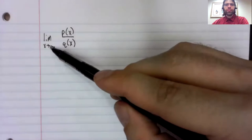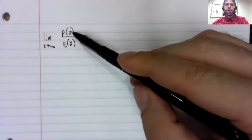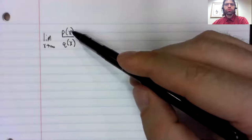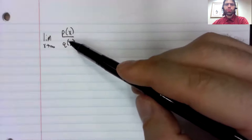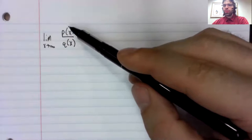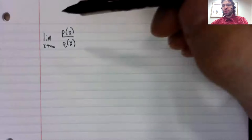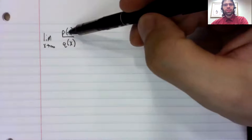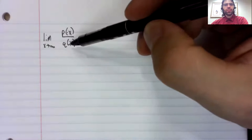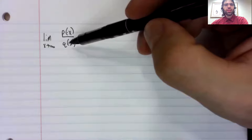As x goes to infinity, any polynomial goes to either infinity or negative infinity. So individually, this limit doesn't exist, and this limit doesn't exist. But the limit of the quotient might.